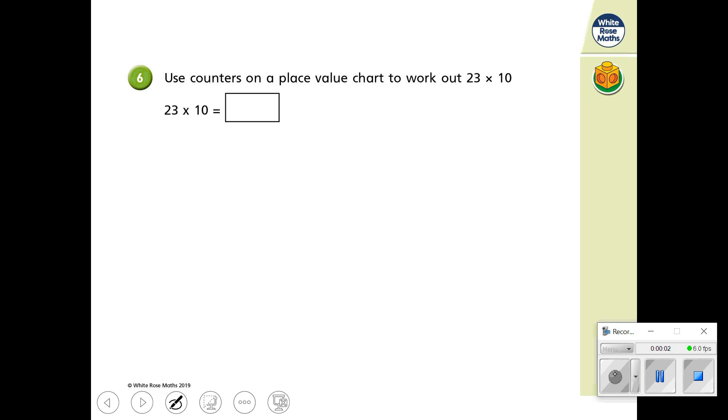I'm going to start by going through the answers from question 6 onwards because they look like slightly trickier questions. So use counters on a place value chart to work out 23 times 10. I just wanted to go over the use of a place value chart with you.